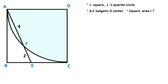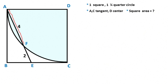Hello everyone. In this video we have one square and one quarter circle. Point A and point C are given as endpoints, and point D is on the quarter circle. This length is given as four units and here is given two units.